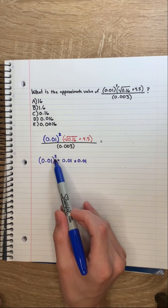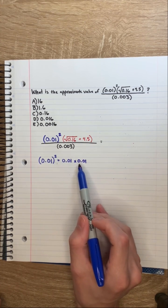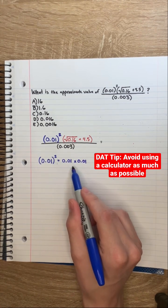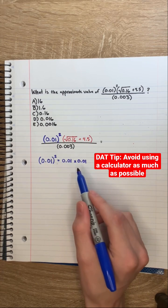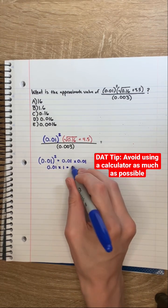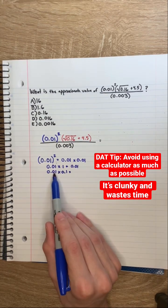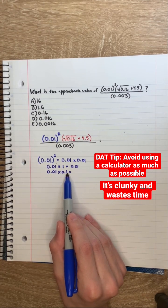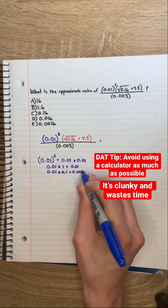So first, if we tackle 0.01 squared, that's just 0.01 times 0.01. And if you immediately don't know what to do about that, you can think of it like this. 0.01 times 1 equals 0.01. 0.01 times 0.1 equals 0.001.